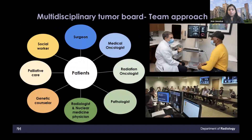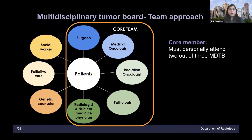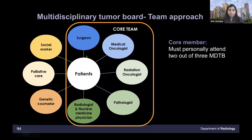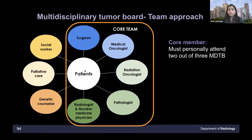The multidisciplinary tumor board is a team approach for the patient's improved care. First the patient gets seen by one of the urologists, and then you meet the whole host of experts. The core team includes a surgeon, medical oncologist, radiation oncologist, pathologist, radiologist, and nuclear medicine physician. There are also other important people like the physiotherapist and other ancillary care not included in this flow chart.